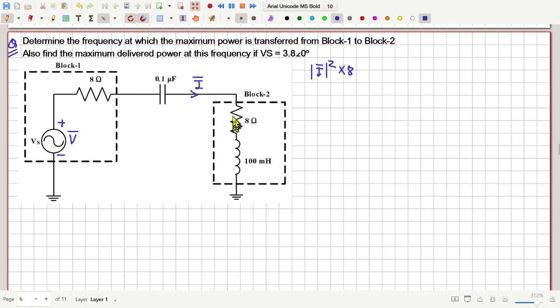And therefore, the power consumed by this resistor will be maximum. So, what is the series resonance condition?